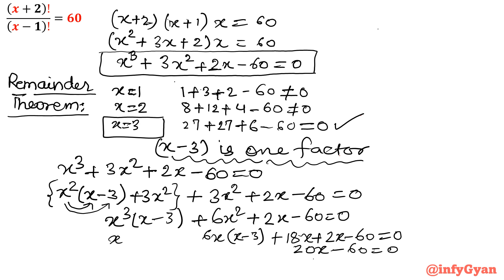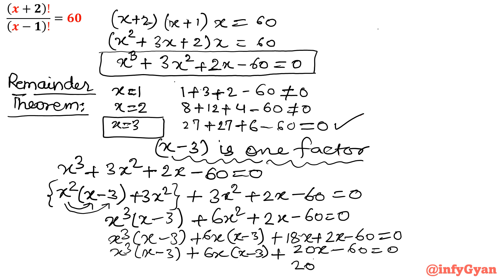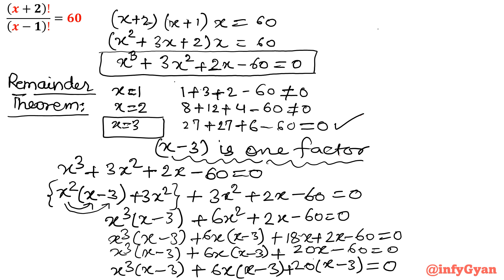Writing all the terms together and taking 20 common from the last bracket, then identifying that (x-3) is present in every term, we take (x-3) as a common factor. After factoring, the equation becomes (x - 3)(x² + 6x + 20) = 0.